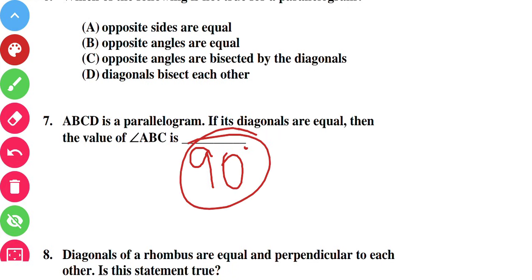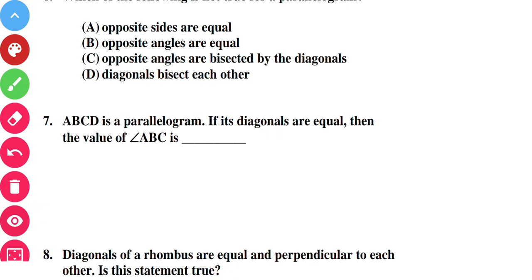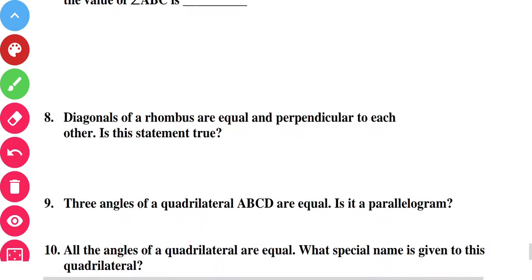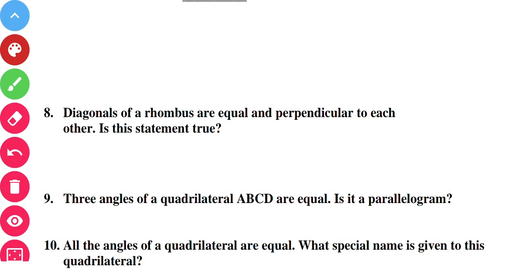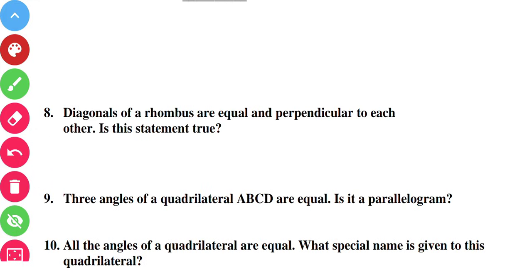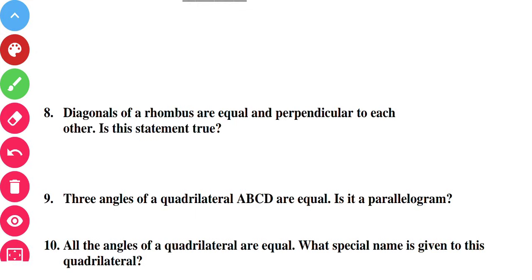Question number eight: are the diagonals of a rhombus equal and perpendicular to each other? No — the diagonals of a rhombus are unequal but perpendicular to each other. So the statement 'diagonals of a rhombus are equal' is false.